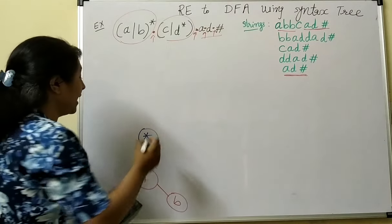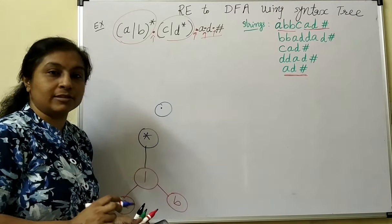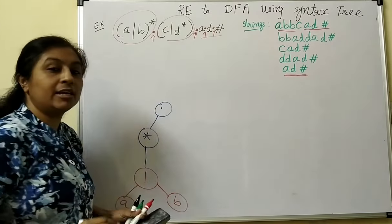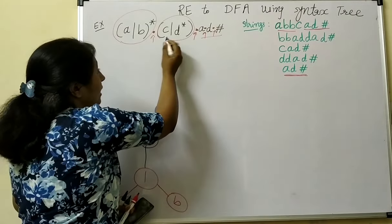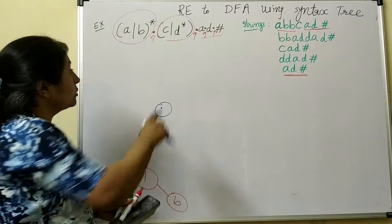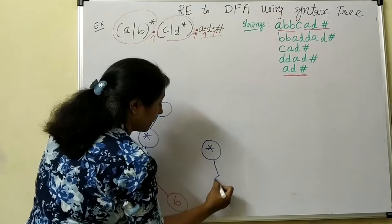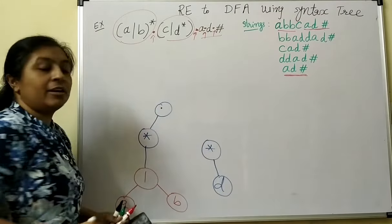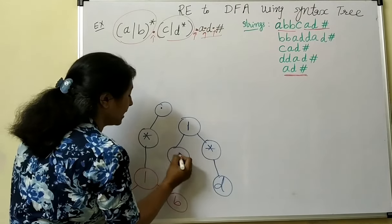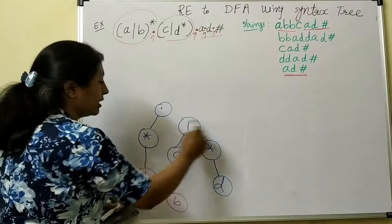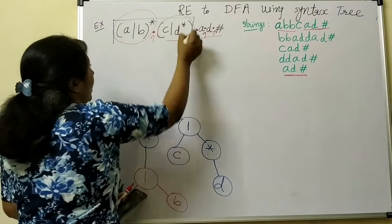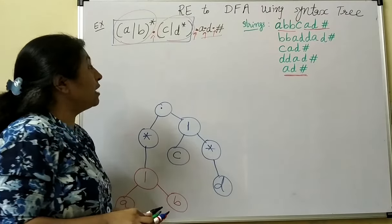Next, apply concatenation on it — that previous concatenation node is the root. The left side is A union B whole star. For the right side we have C union D star. Since Kleene's closure has higher precedence than union, first construct a node of D star. Then take a union operator with D star on the right and node C on the left. This subtree is the right-hand side of the first concatenation, giving us A union B whole star concatenation C union D star.